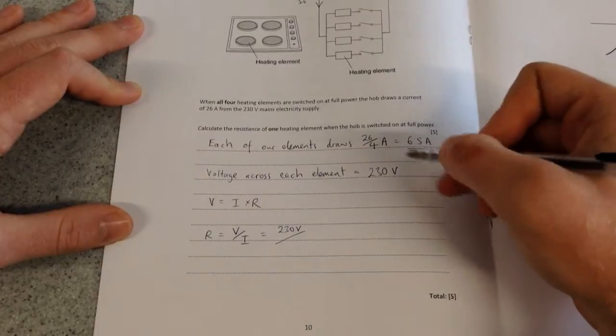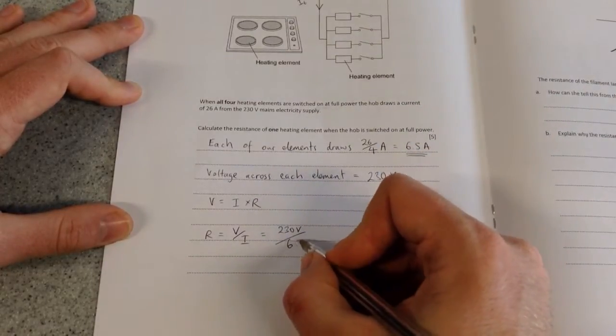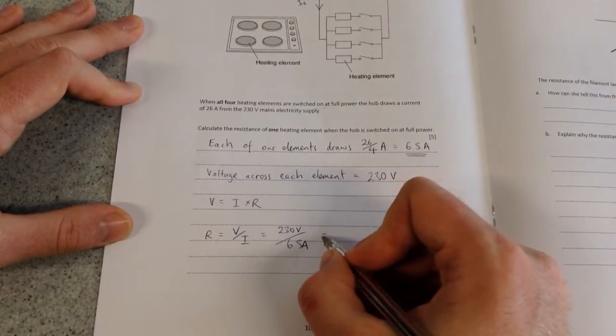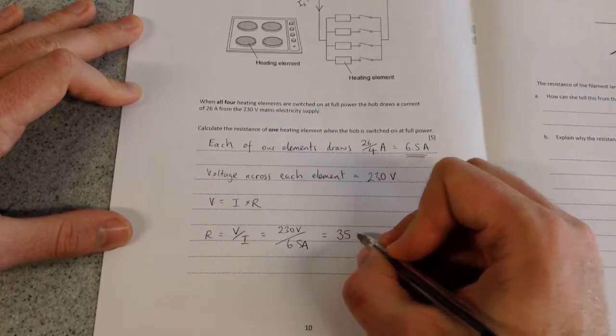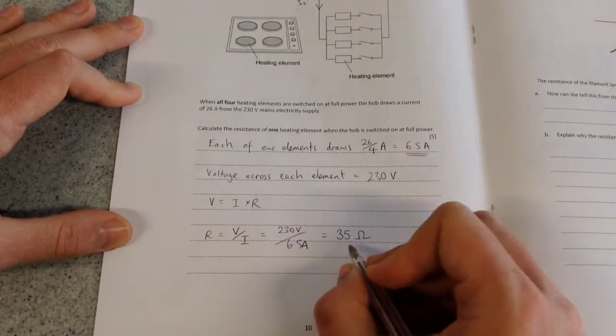The current flowing through one element, 6.5 amps. Which gives us an answer of, roughly speaking, 35 ohms.